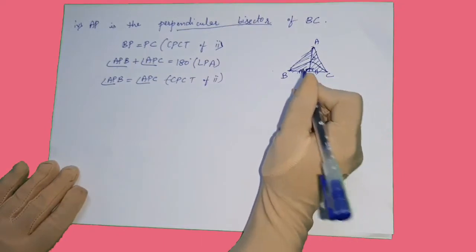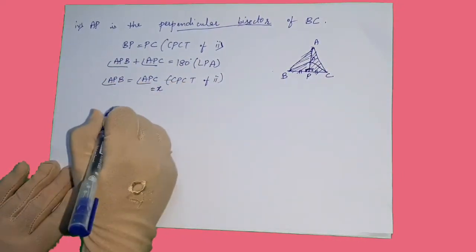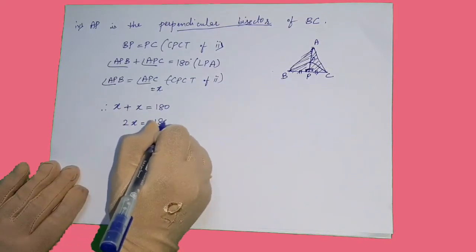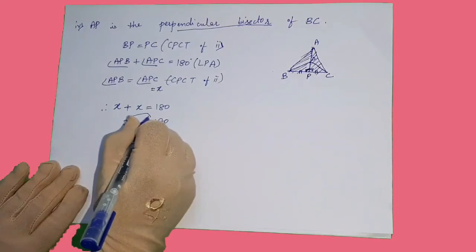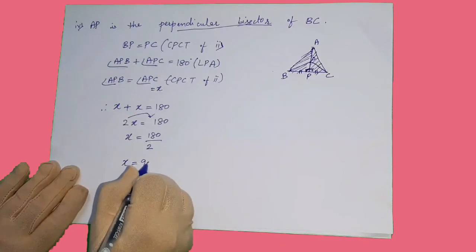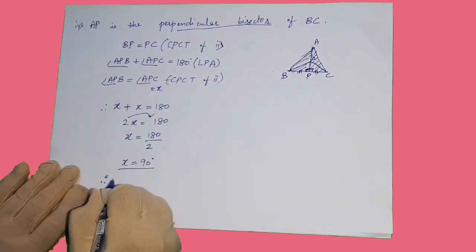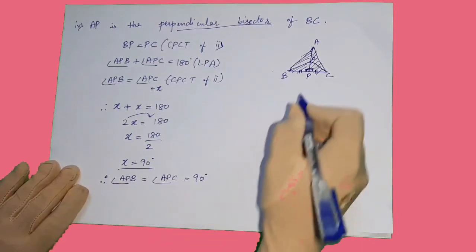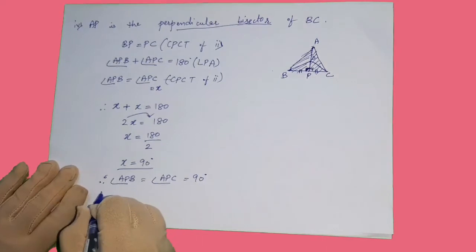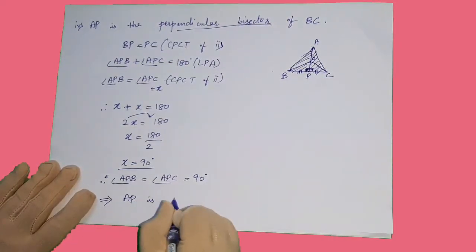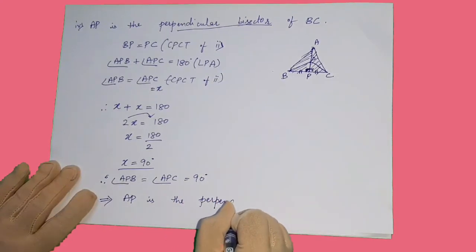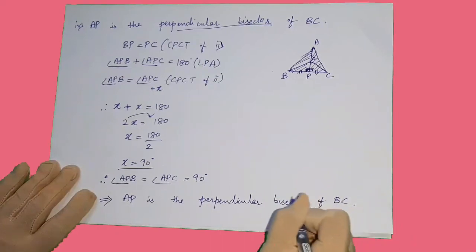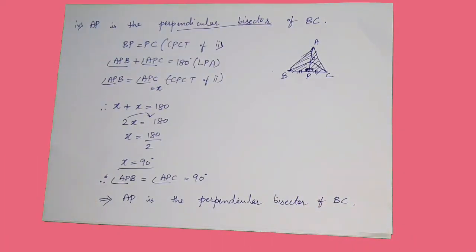Since both angles are equal, let each equal X. Then X plus X equals 180, so 2X equals 180, giving X equals 90 degrees. Therefore angle APB equals angle APC equals 90 degrees. Since BC is divided into equal parts and the angle is 90 degrees, AP is the perpendicular bisector of BC. Hope you have understood this question. If you have any doubt, you can ask in the comment section. Thank you.